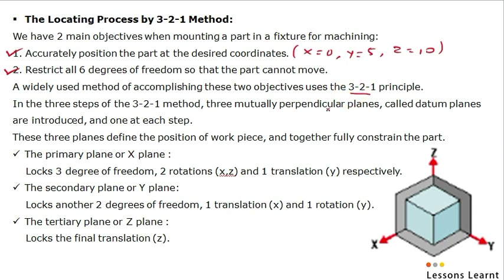In the 3-2-1 principle, there are three steps, and three mutually perpendicular planes are used, as shown in this image. You can see this is the first plane, this is the second plane, and this is the third plane. These three planes are perpendicular to each other and are also called datum planes.